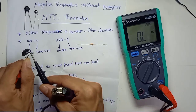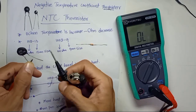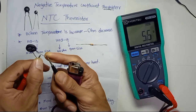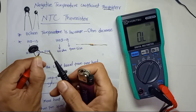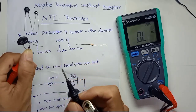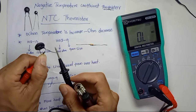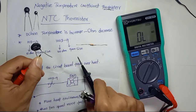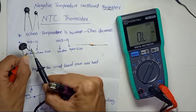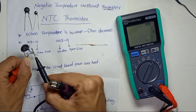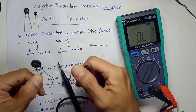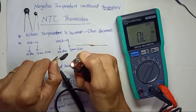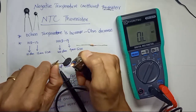You cannot hold the thermistor with both hands because your body heat will affect the reading. Just hold one side with one finger and leave the other side free. By right this is a 10-ohm thermistor — around 6 or 7 ohms at room temperature with tolerance. Now I'll apply heat to it without burning it, just making the environment hot.